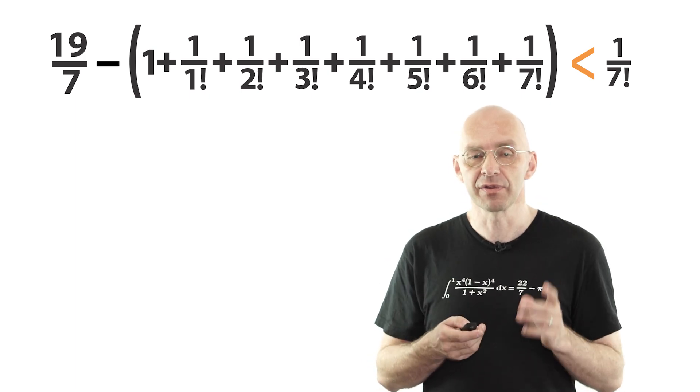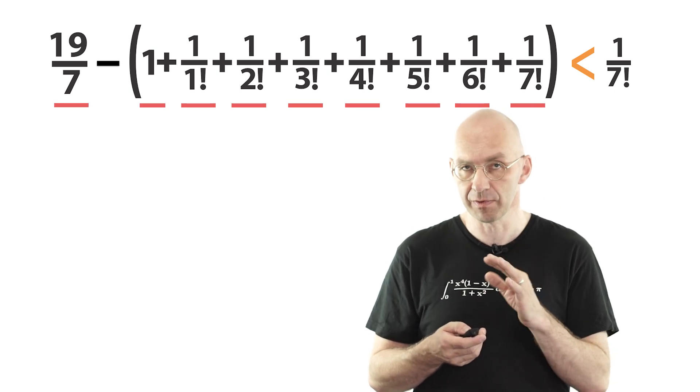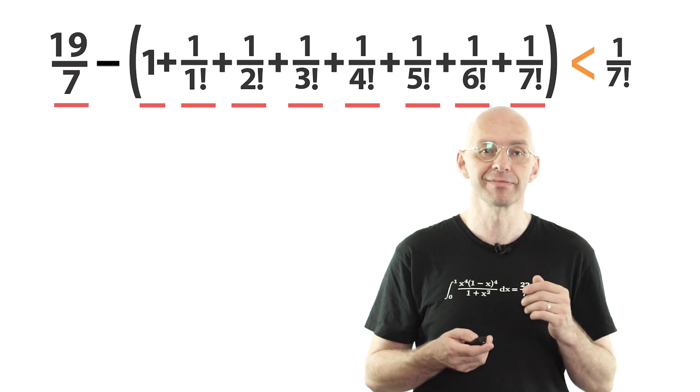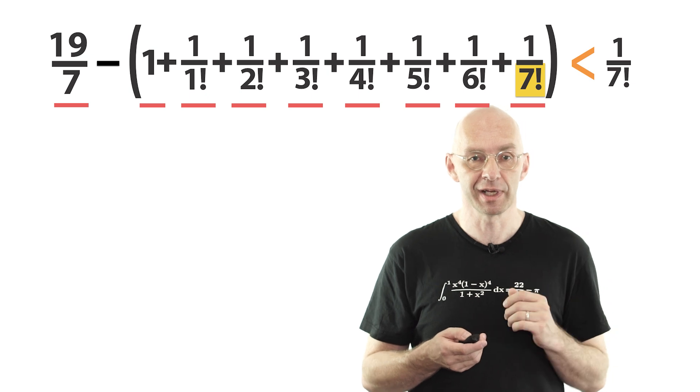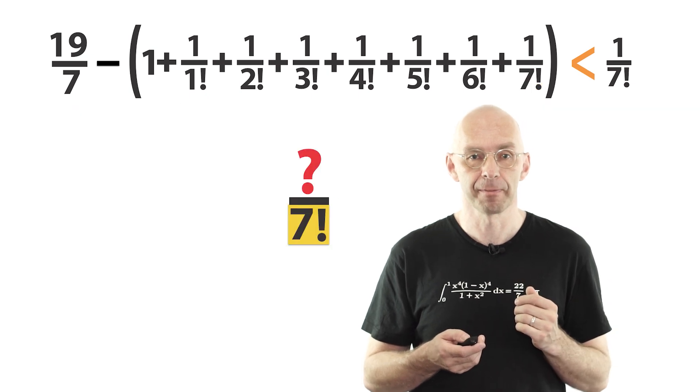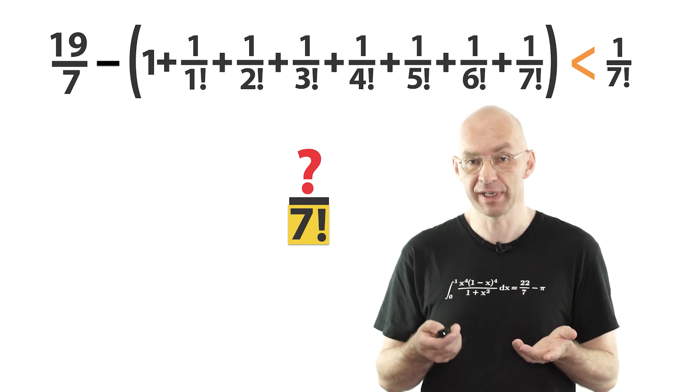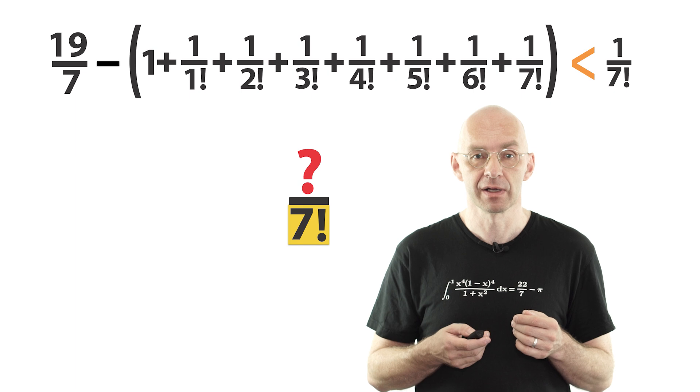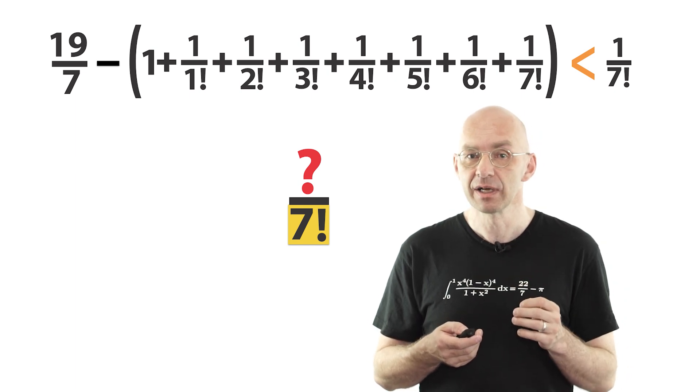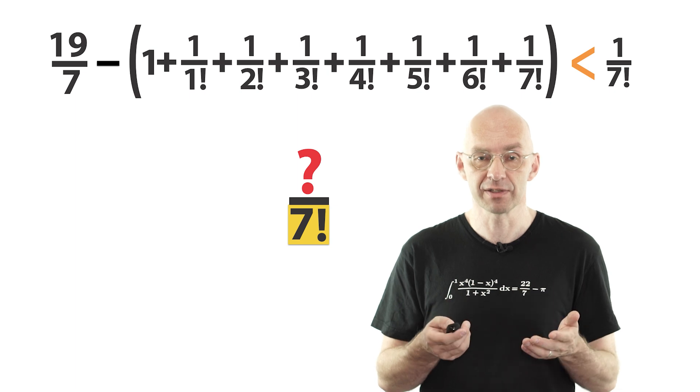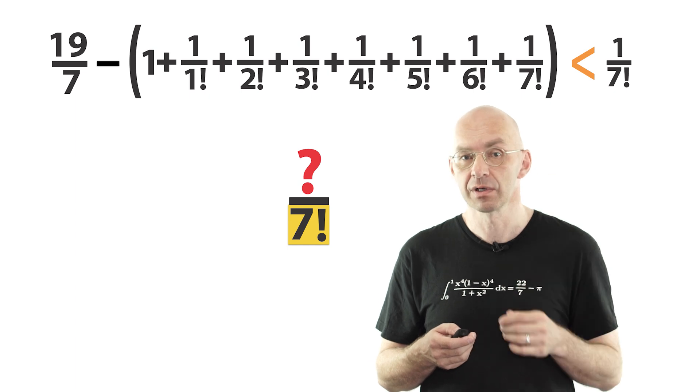Now all the denominators on the left divide 7 factorial. Right? Just think about it for a moment. Yes, they divide 7 factorial. Which means that we can combine the left side into a fraction with denominator 7 factorial, where the question mark stands for 1 or 2 or 3 or some other positive integer. So, if 19 over 7 was really equal to e, then we just showed that this fraction, the error, would be 1 over 7 factorial or larger. But, and this is really the punchline, we already know that the error is definitely smaller than 1 over 7 factorial.